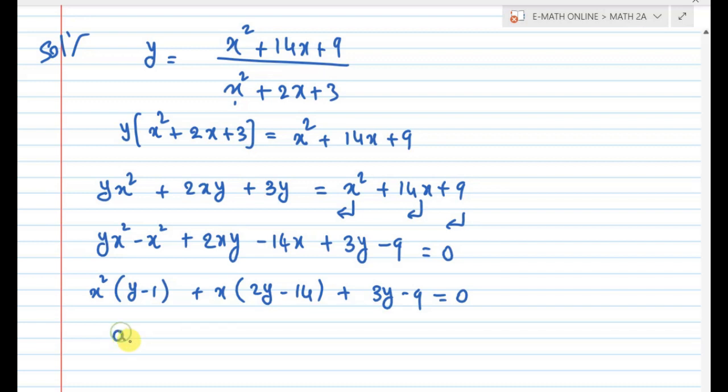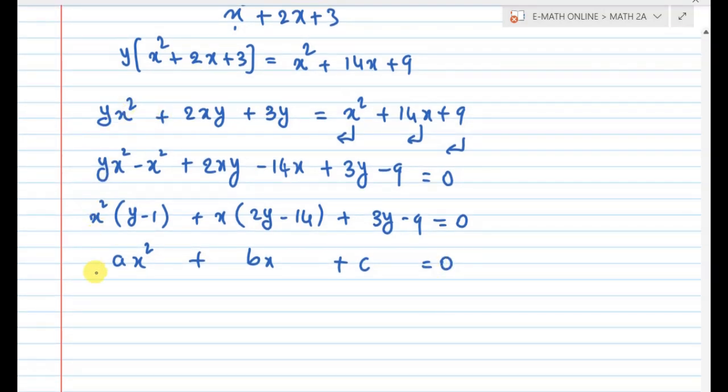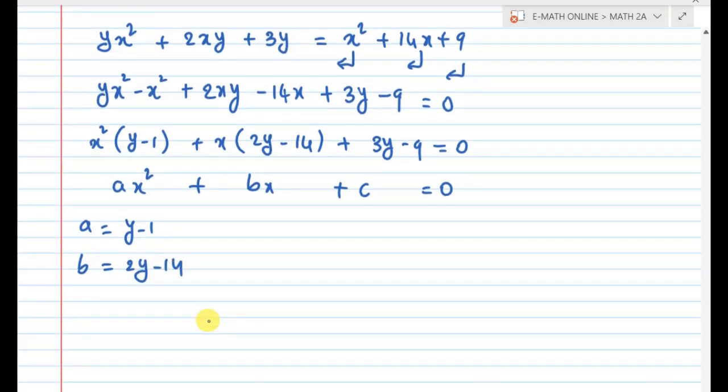Now compare to ax squared plus bx plus c equal to 0. a is equal to y minus 1, b is equal to 2y minus 14, and c is equal to 3y minus 9.